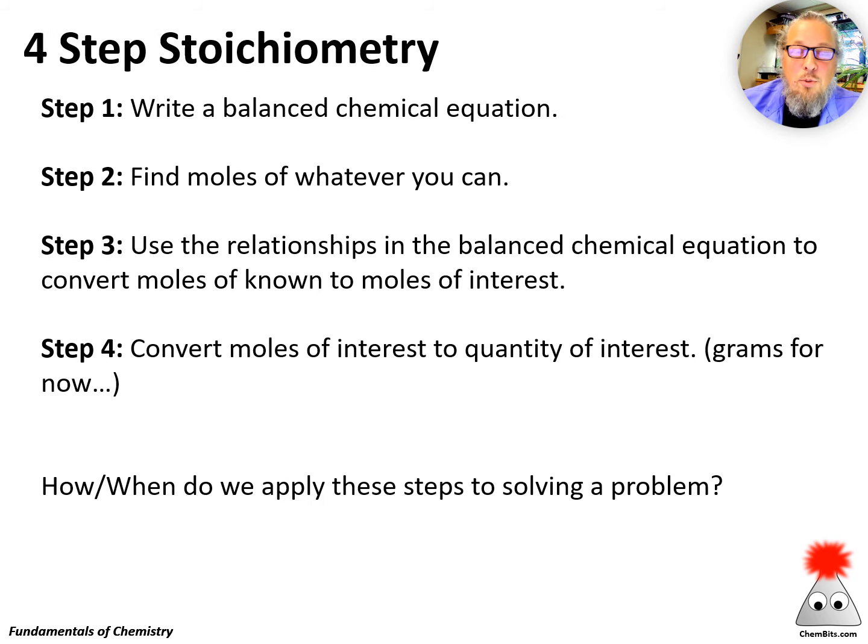Whenever we're doing a stoichiometry problem, we've got a four-step process. Step one, write a balanced chemical equation. In order to do that, you need balanced chemical formulas. That's really the key to the stoichiometry problem. Step number two, find moles of whatever you can. Moles are going to be important here, so find moles of whatever we have enough information to find moles of.